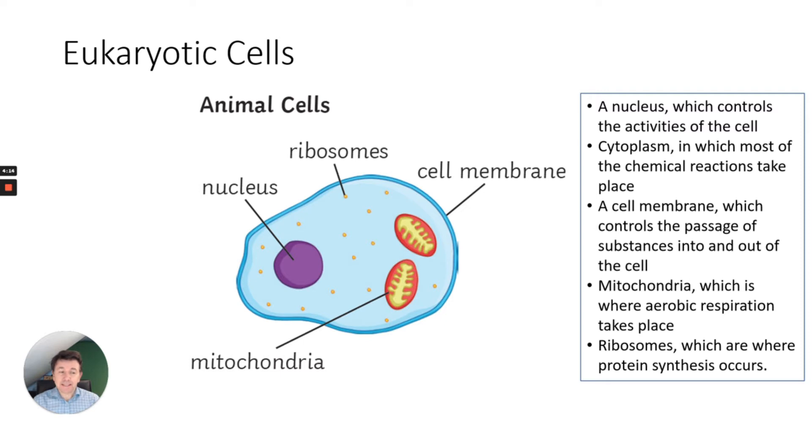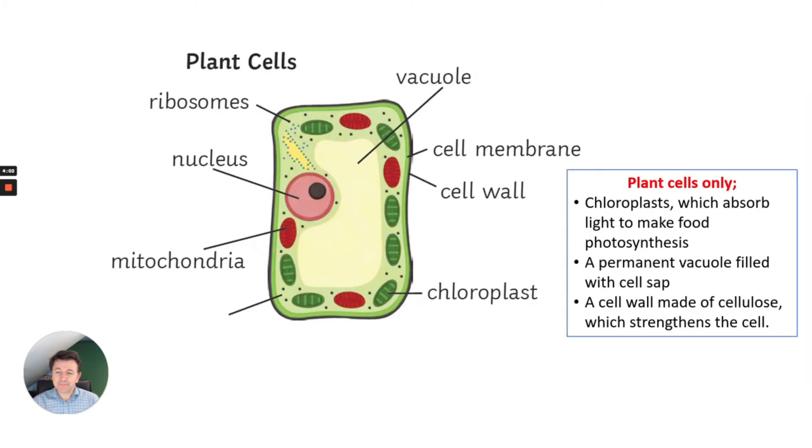We also have mitochondria, which is where aerobic respiration takes place, and ribosomes which are where protein synthesis occurs. In plant cells, all of the same features of animal cells are present.